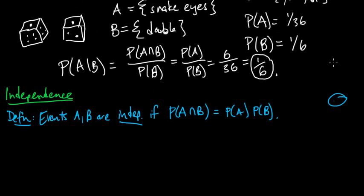Similarly, in our dice example, you would consider the outcome of the roll of one die to be independent of the outcome of the roll of the other die.